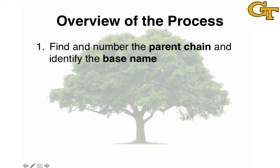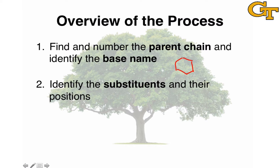For cycloalkanes, the parent chain will always be the cyclic array of carbon atoms. Numbering the chain is an interesting issue because, unlike an acyclic chain that has a beginning and an end, there's no natural place to begin numbering here, so we'll see how to address this issue when we get into the quirks of cycloalkanes.